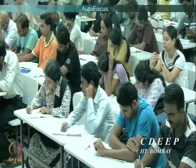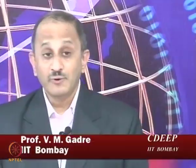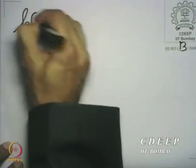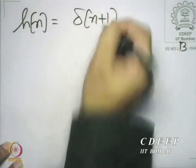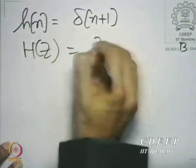So you see, it is a very tricky point — the bounding circles may or may not be in the region of convergence, and that must be carefully seen. Let us take another example: h[n] = δ[n + 1], and it is very easy to see that the z transform is simply z.